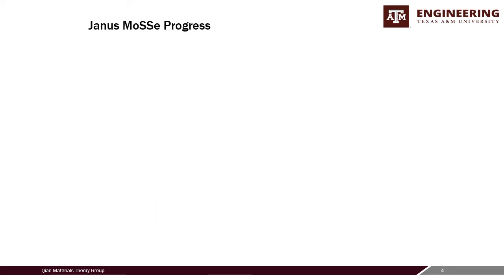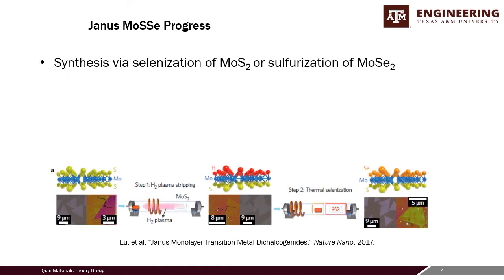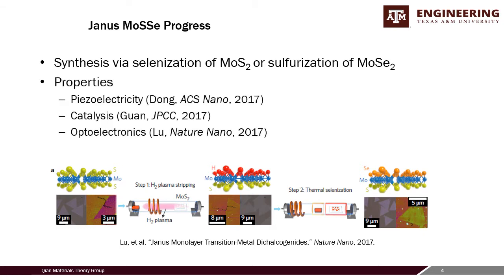The Janus material can be synthesized in two ways: you can either selenize MoS₂ or sulfurize MoSeS₂, both of which replace the top layer of atoms with a different chalcogen atom. The figure shown from Jun Lo's group at Rice shows a selenization of MoS₂, where selenium on top replaces sulfur. The unique properties recorded include piezoelectricity, photocatalysis, and applications in advanced optoelectronics — especially resulting from the out-of-plane dipole moment.